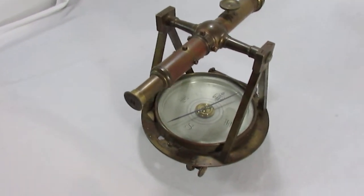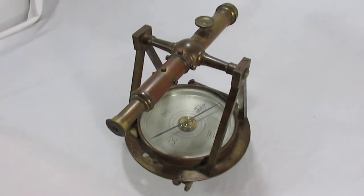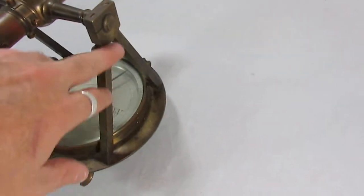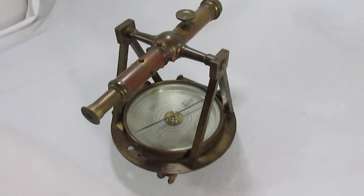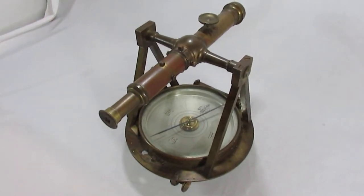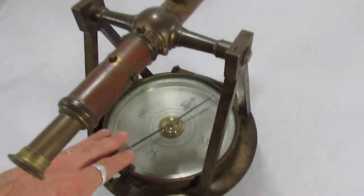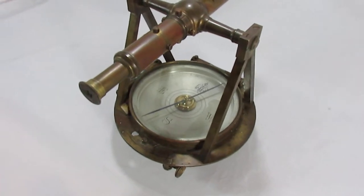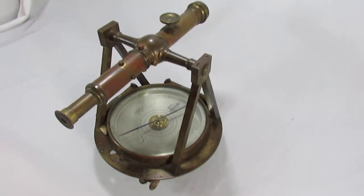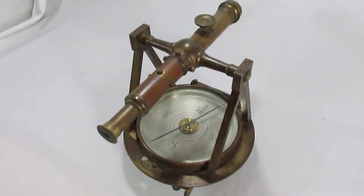This would be a surveyor's instrument. We've done some research, and based on the A-frame design and the simple design of the scope and everything, the compass face, and all the features that are on this or not on it, we believe indicate that it's a really early example.